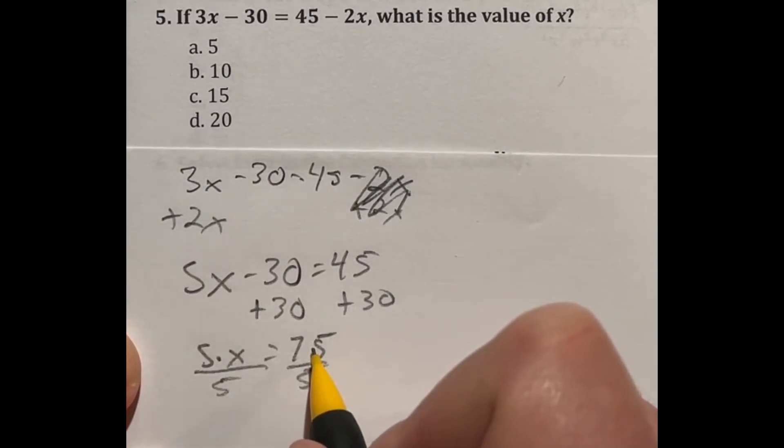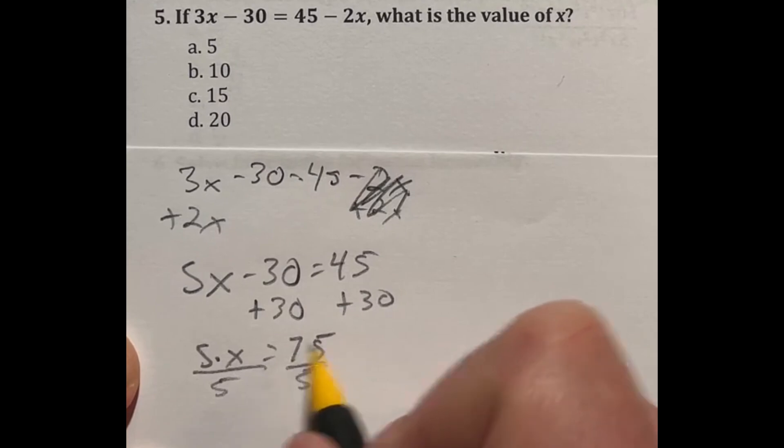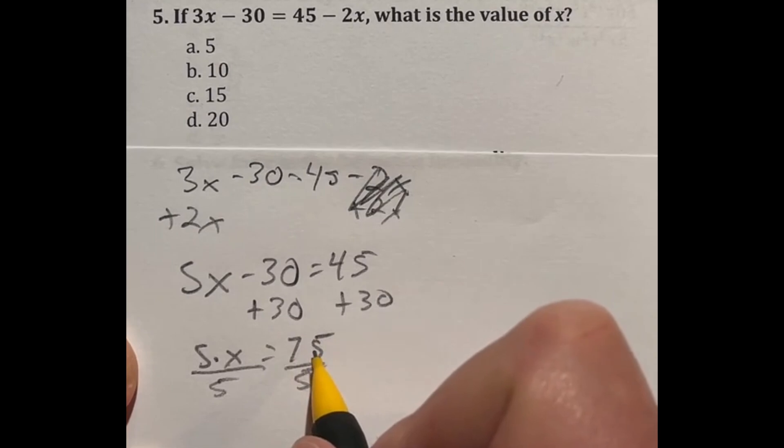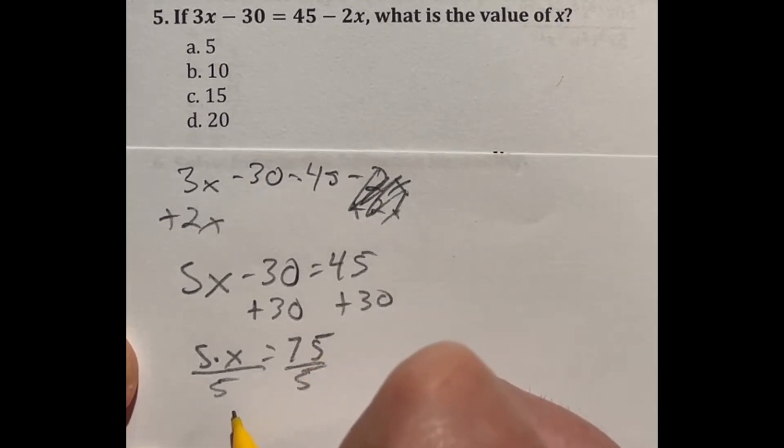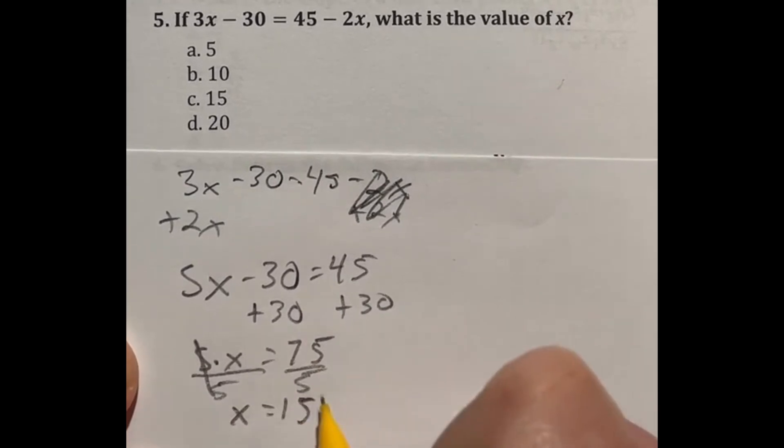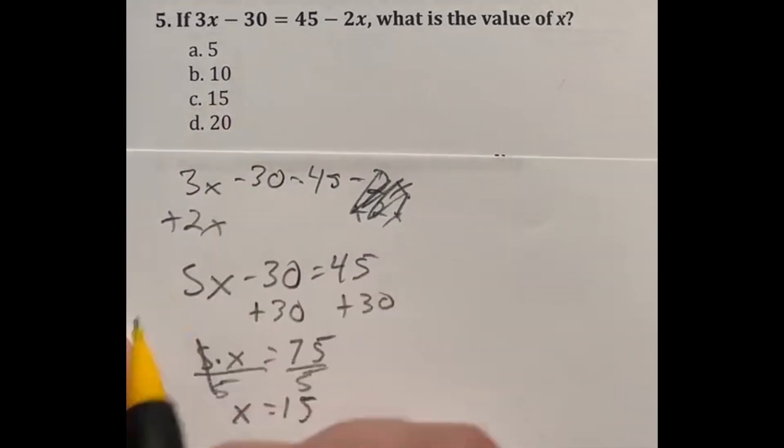So what is 75 divided by 5? Well, I know that 50 divided by 5 is 10. And then I still have 25 left. So 25 divided by 5 is another 5. So 10 plus that 5 is going to give me 15. That means that in this case, these cancel out and I'm left with x equals 15. So it looks like our answer today is C.